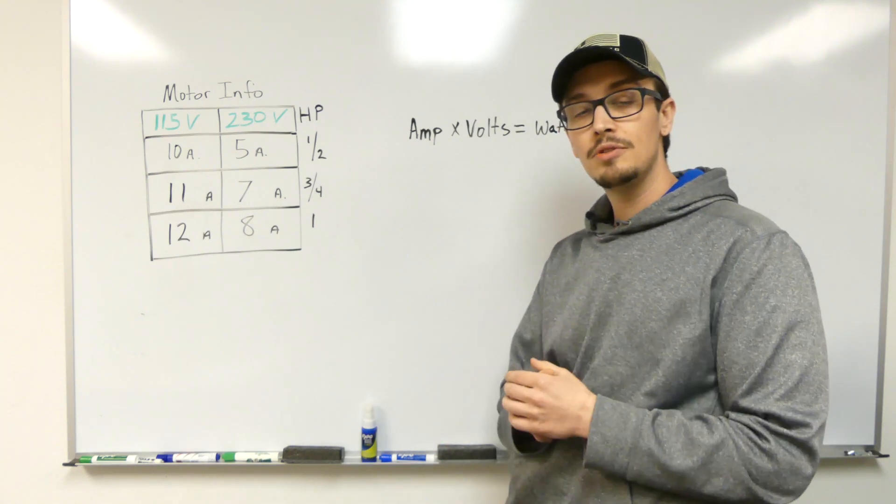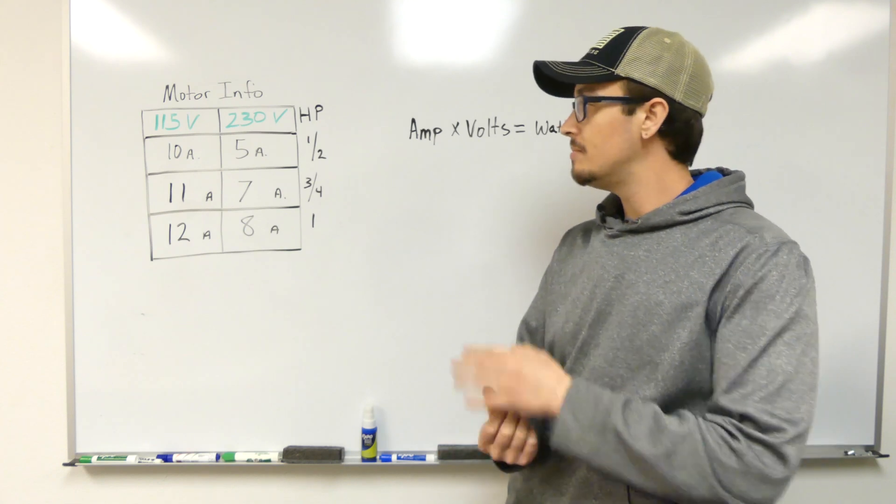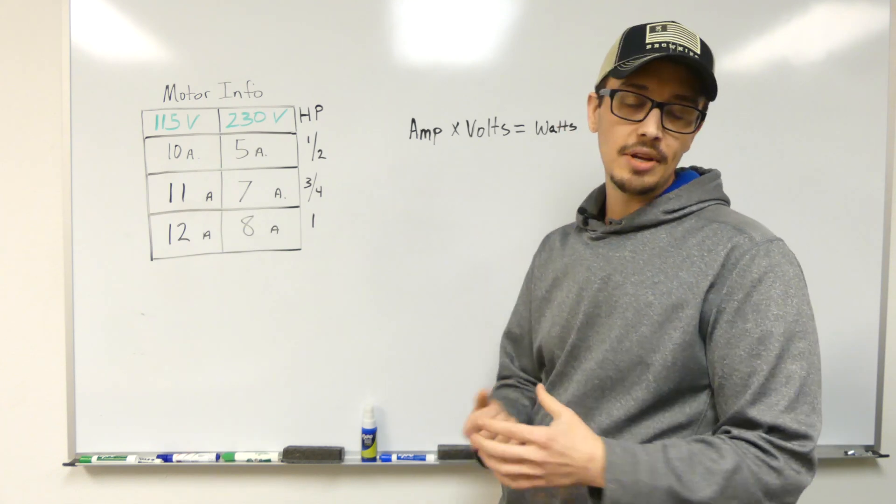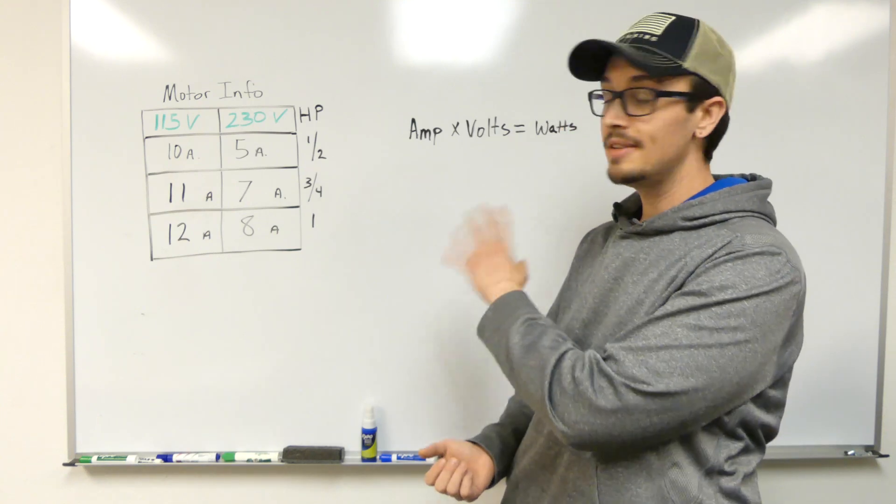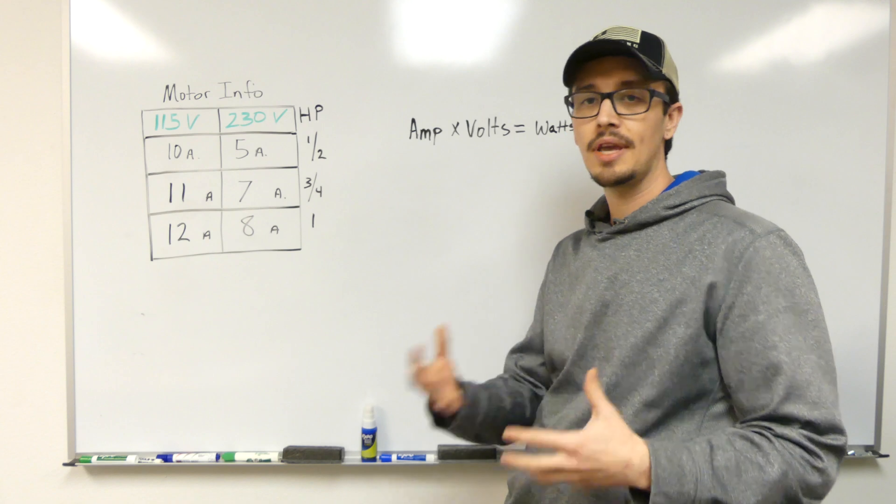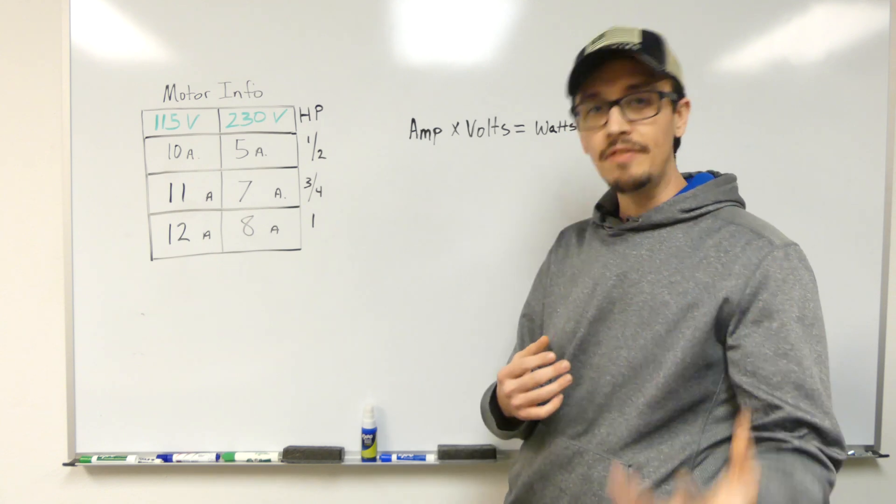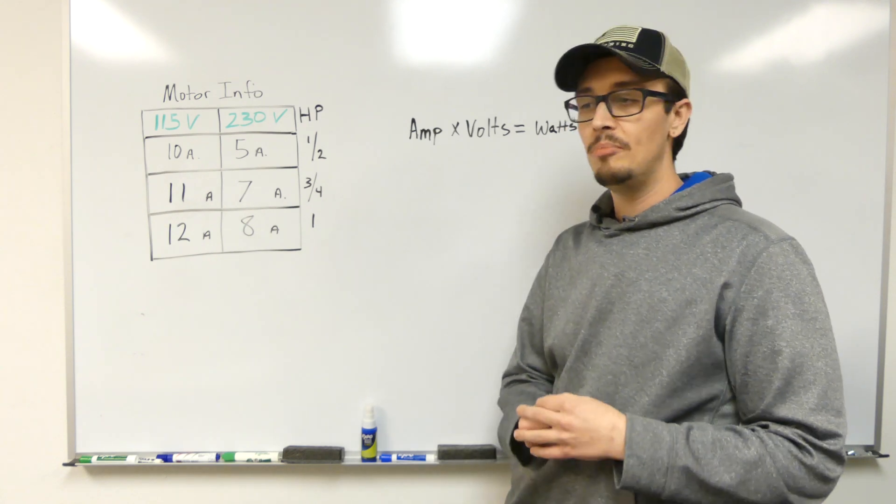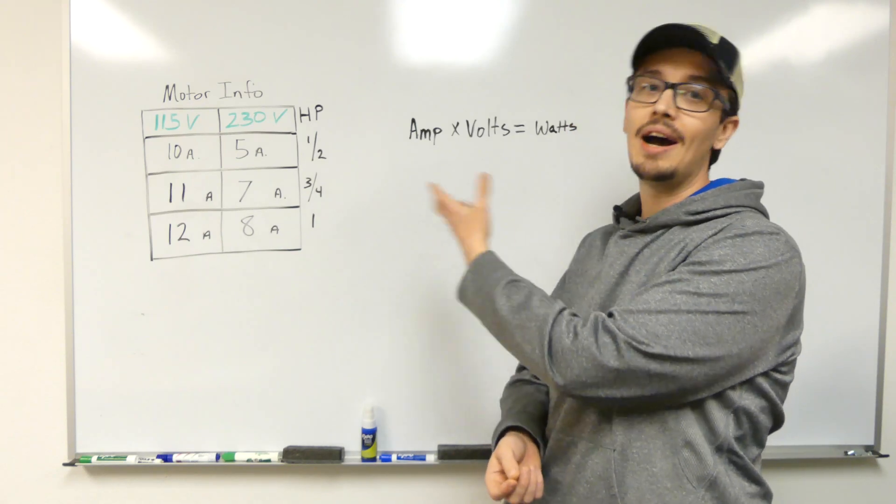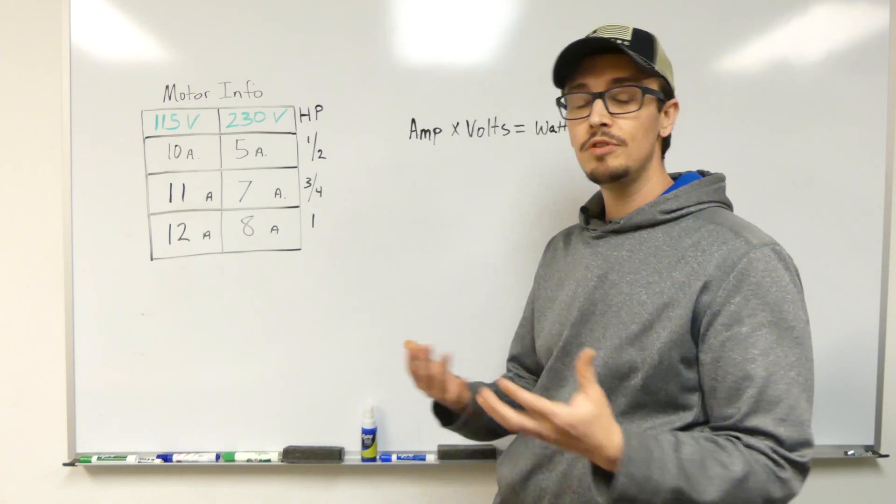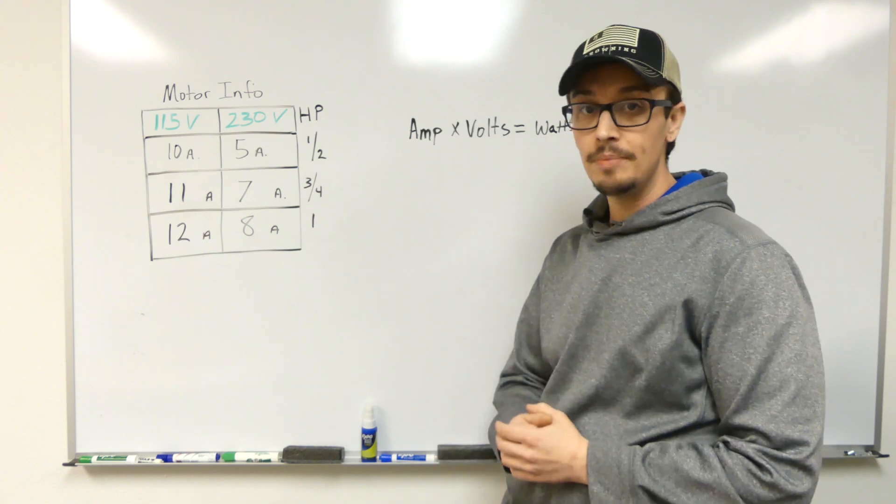So I'm going to show you just a really simple formula to calculate a rough estimate of what it's going to cost you per hour to run. Now a more complex formula does exist for actually calculating this, taking into account a few variables, efficiency and so forth, but this is just an estimate. This is going to give you a little bit of a high estimate, which in most cases it's better to be safe than sorry.